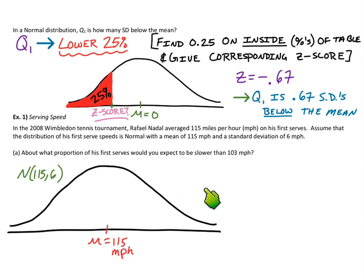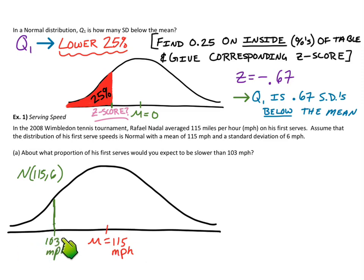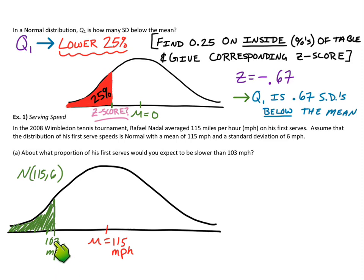Now we're looking to estimate about where 103 would fall — we know it's below the mean somewhere. So I'm going to put a boundary at 103 and shade everything below it. It's definitely less than half the graph; it looks like less than 25%. We want to get a more exact estimate by converting 103 to its z-score and then looking it up on the chart.